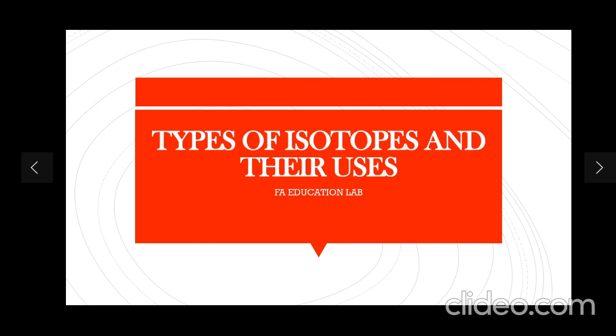Now scientists divide isotopes into two main types, which we will be dealing with in a moment. So before getting started, let's just have a look at the syllabus.